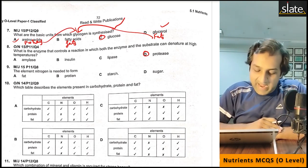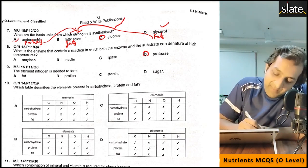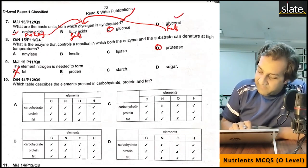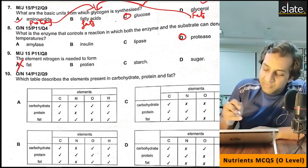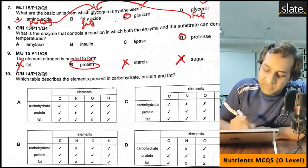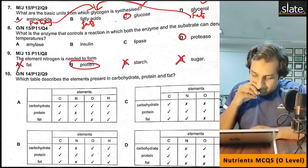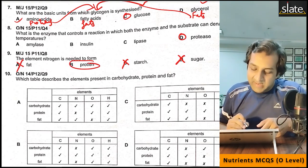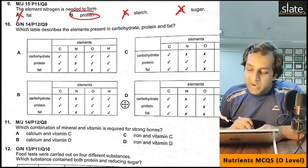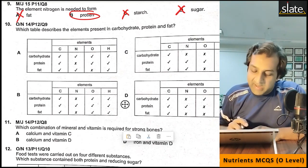The element nitrogen is needed to form proteins. Nitrogen is not in fat, not in starch, not in sugar. The difference is that nitrogen is found in amino acids. So the element nitrogen is found in proteins, not in carbohydrates or fat.